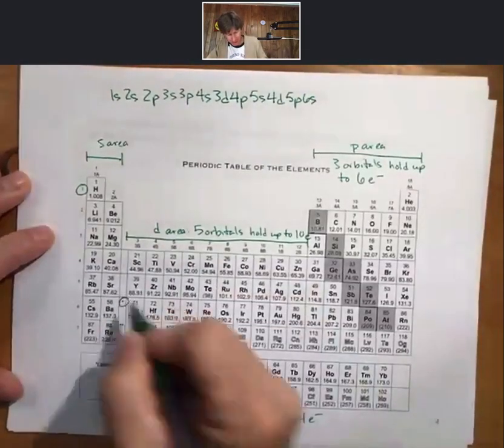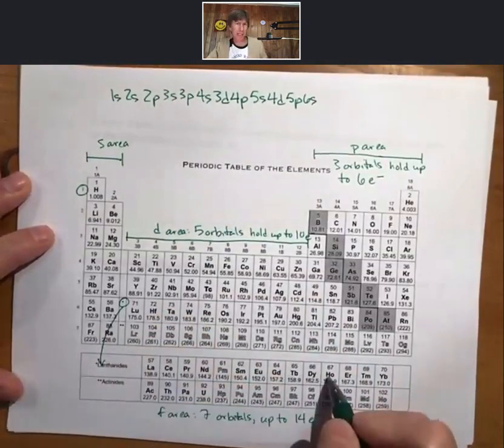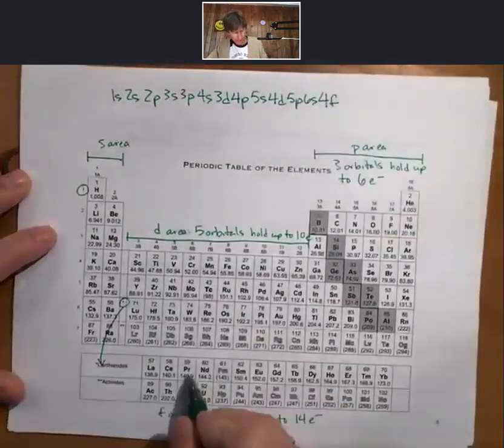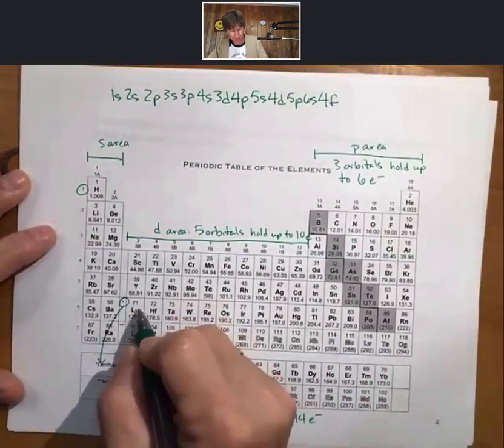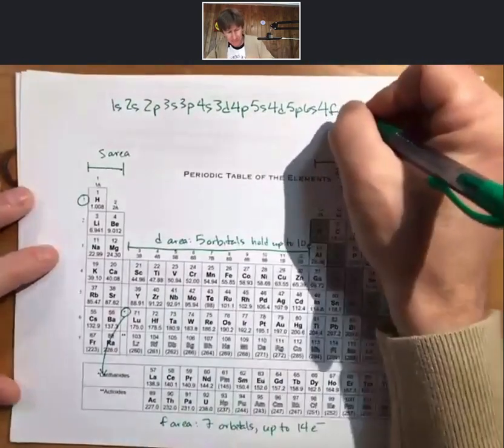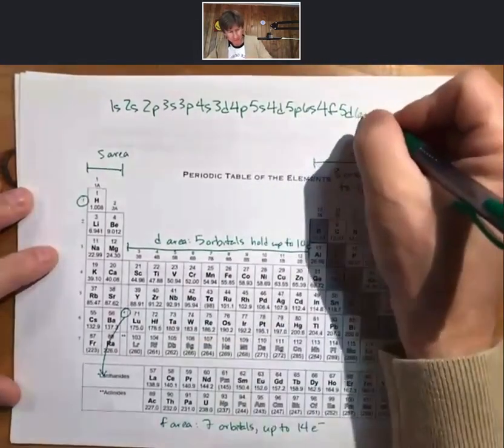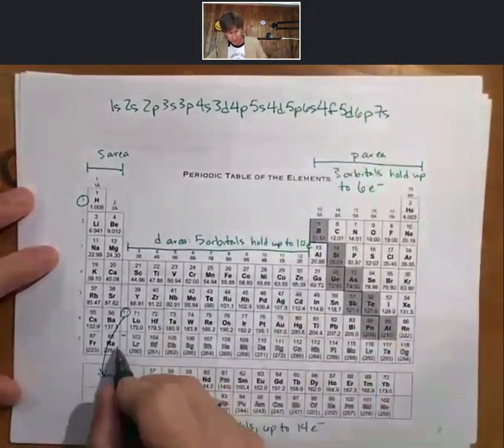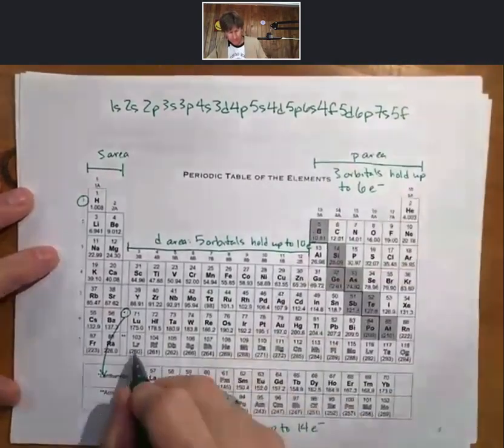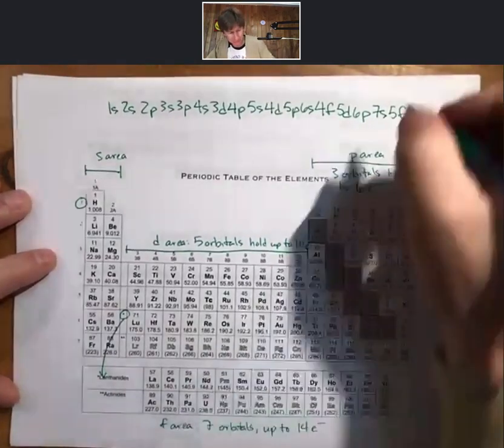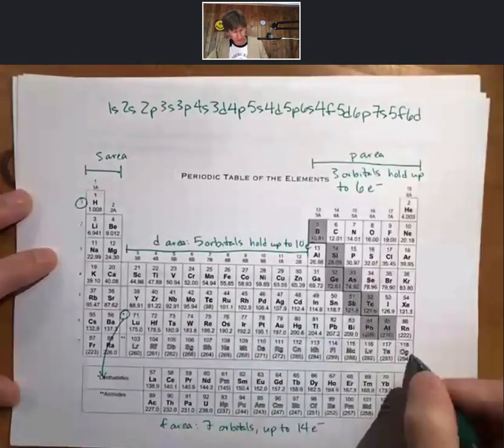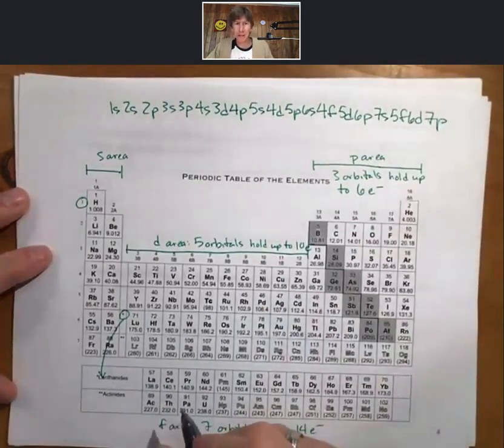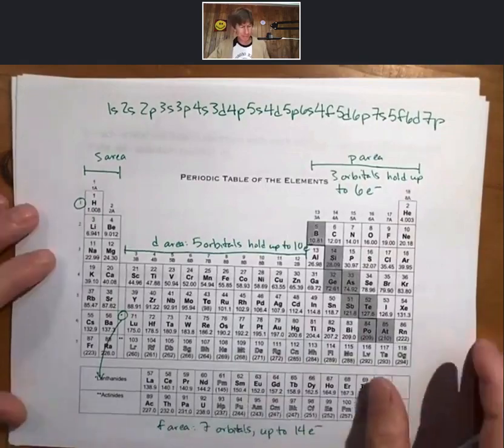We hit the asterisk, the asterisk says go down, we find our first f area, our first f area is 4f. Back up to 3, 4, 5d, 6p, ding, 7s, second asterisk, 5f. 3, 4, 5, 6d. And for all of the elements that we know of so far through 118, the last one is 7p, which is a little bit farther than the previous slide went to, but that covers all the elements.